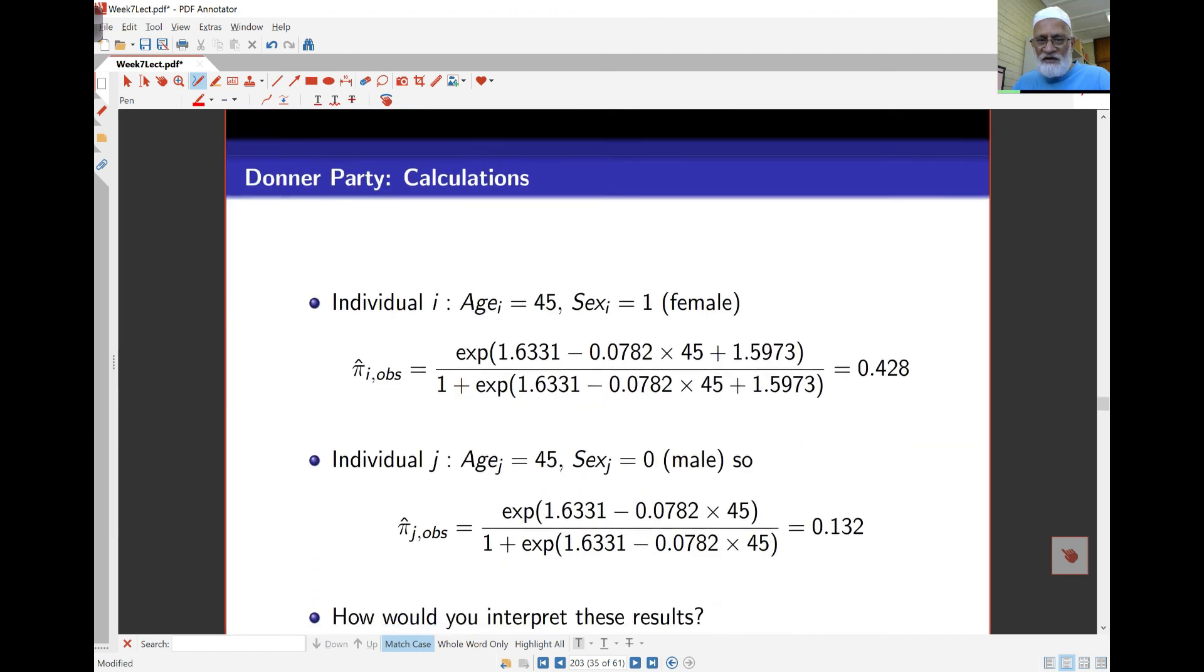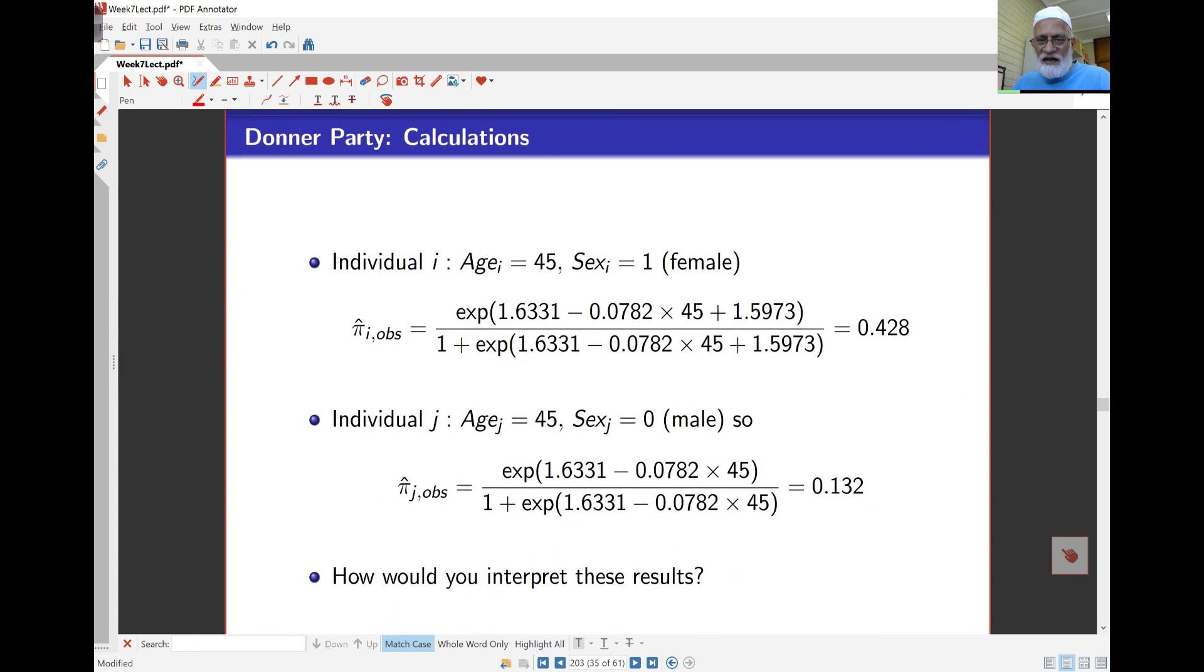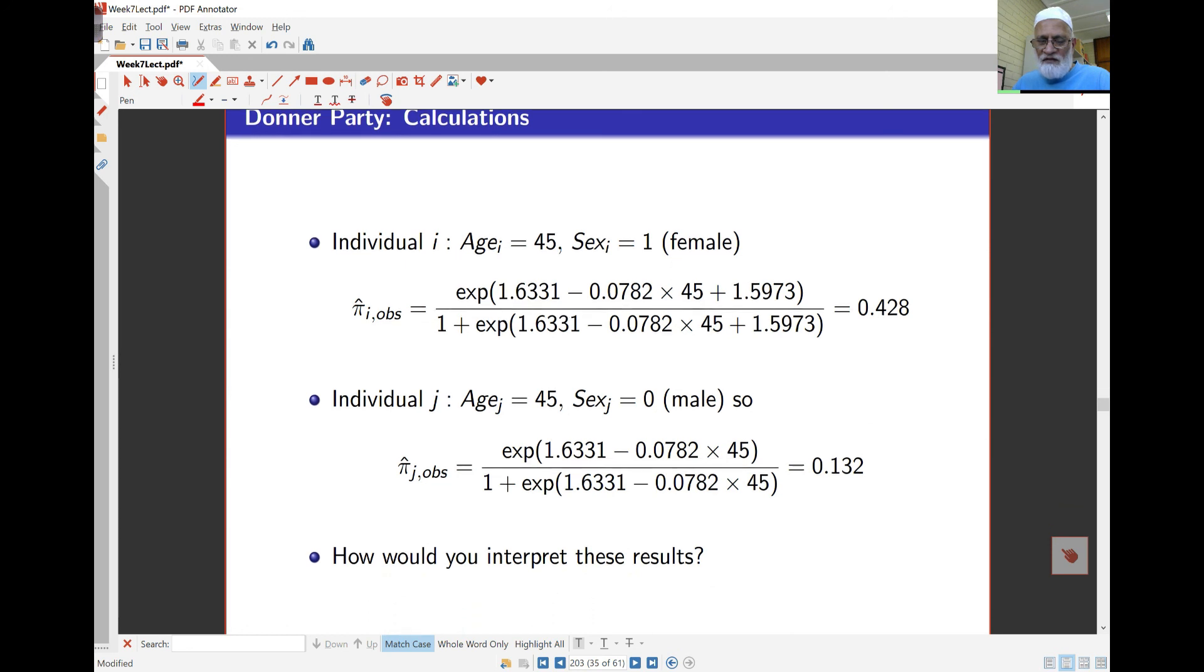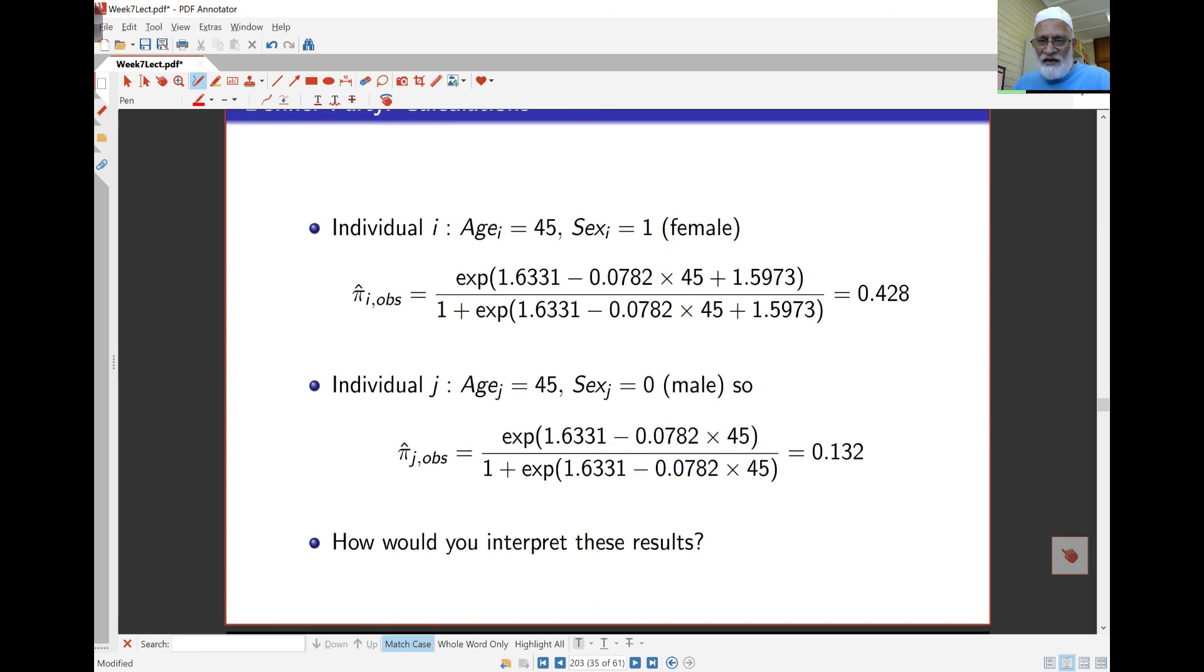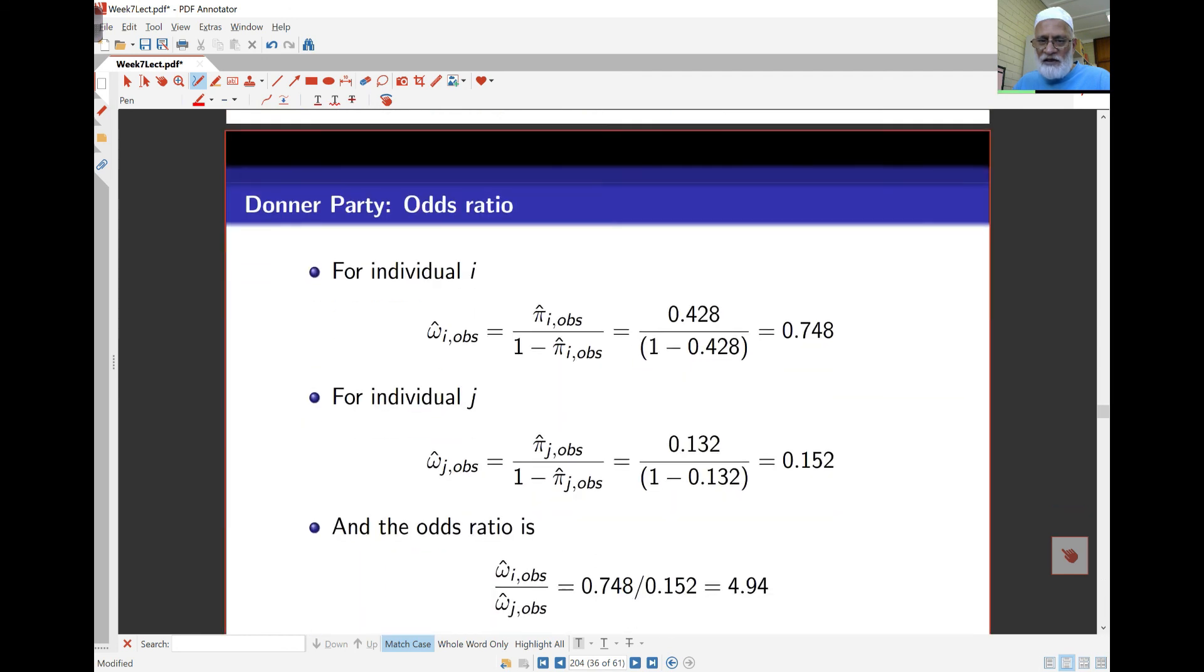As far as probability goes, you can see what's going on here. I've got age is 45, and this is for a female, the probability of survival is 0.42. If the age is 45 and the person is male, the probability of survival is 0.132. And if I divide those two, I should get the odds I had earlier.